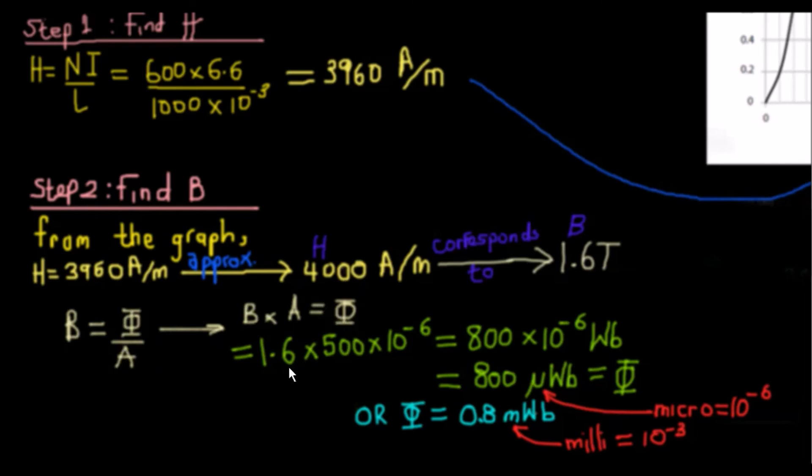So our flux density is 1.6, our area which we are given in the question is 500 millimeter square, and that's why we put times 10 to the power minus 6, that converts it to meter square. If we put this in our calculator we'll get 800 times 10 to the power minus 6 weber. Anytime we see times 10 to the power minus 6 it's micro, so we can just replace it with micro. If we want to go a step further, we could take the decimal point and move three places, and it goes from micro to milli.